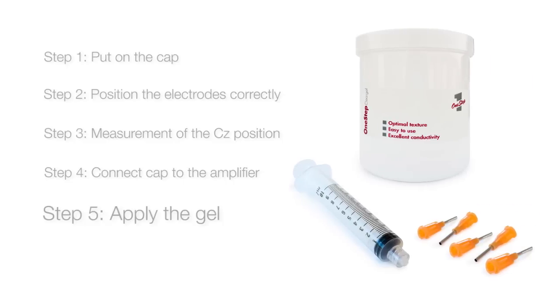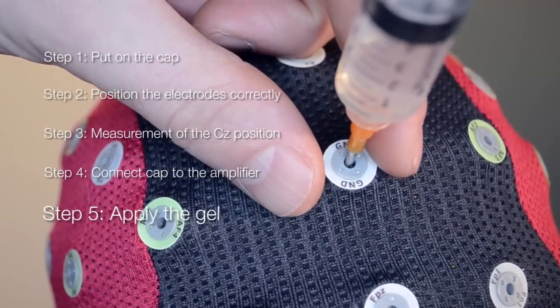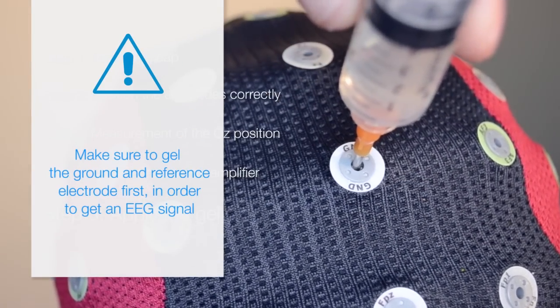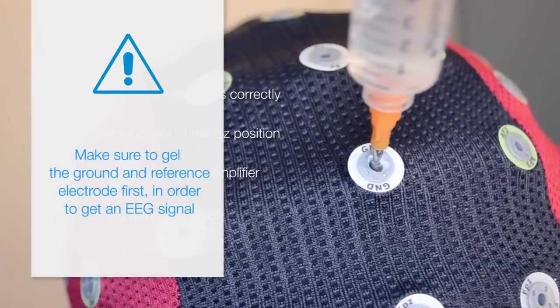Apply gel using a dedicated syringe. Blunt needles allow for easy insertion of gel through the hole at the top of each electrode. Fill the syringe with gel and inject a small amount through the hole in each electrode. Apply the gel with a circular hand movement.